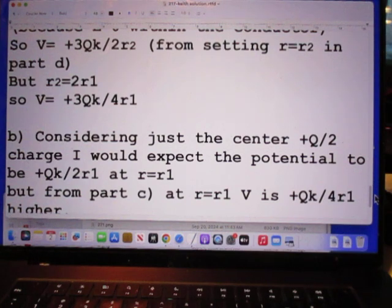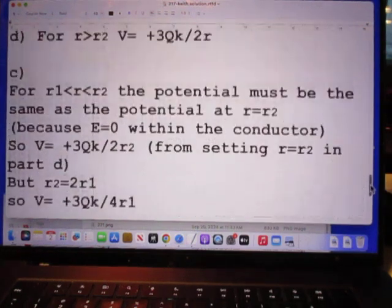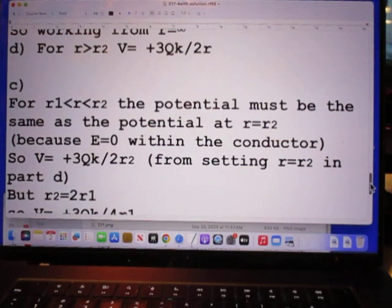From setting R equals R2 in part D. But we know that R2 is 2R1, so he finds that the potential is plus 3QK divided by 4R1. So, that's his answer to C.